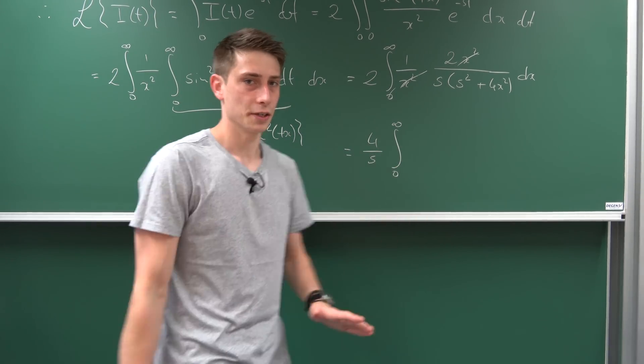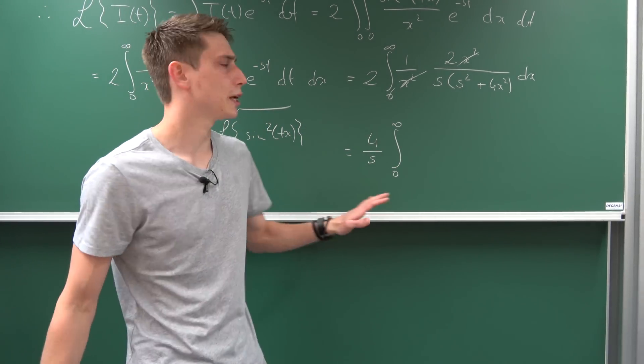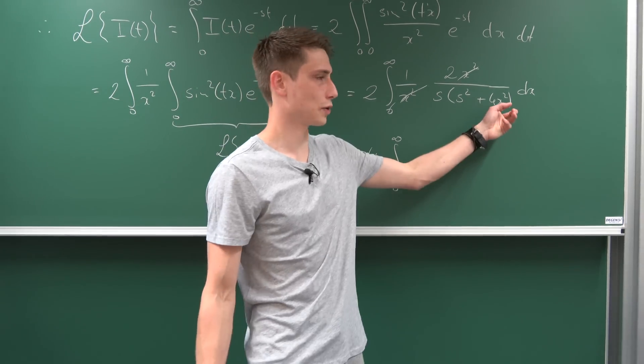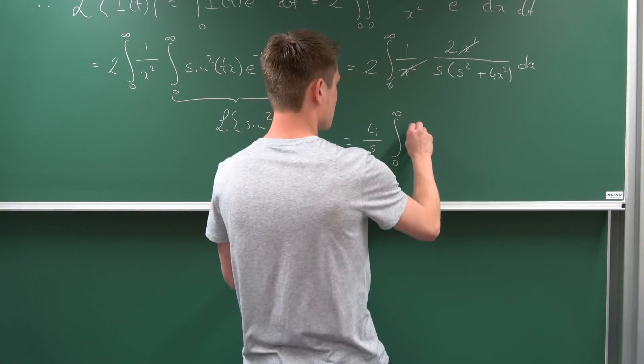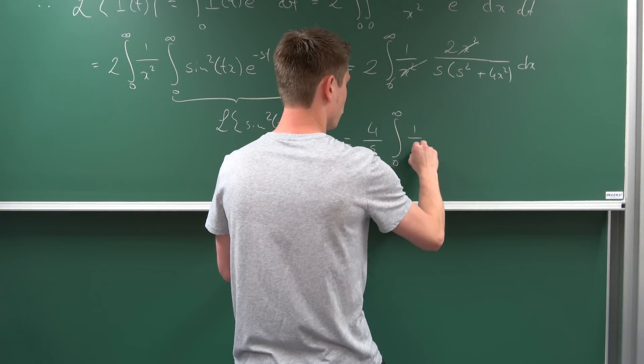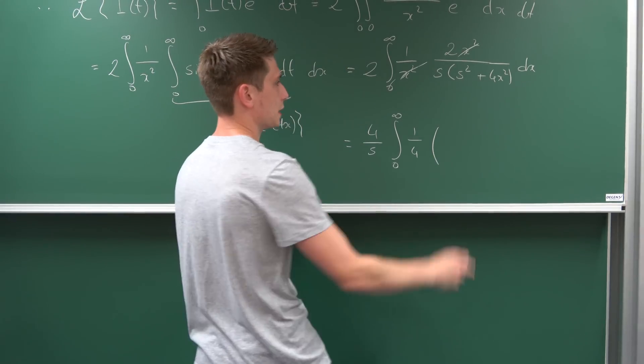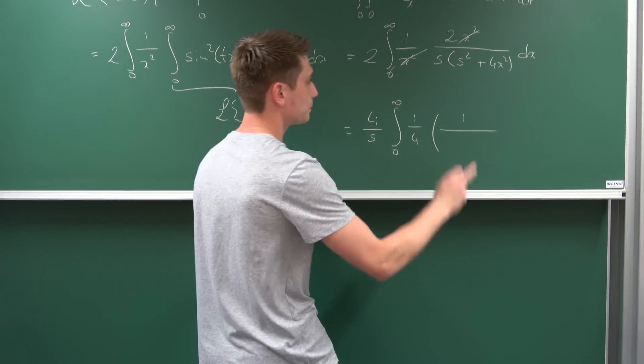This is going to be the inverse tangent. Let's manipulate it a bit because we want to isolate the x² term. Factor out 4, so we have 1/4, and what else do we get? We have 1 over...